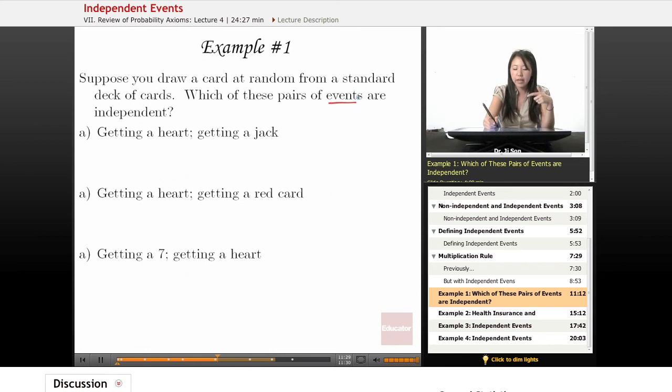It just means that it's like two different aspects of that card, like heart and jack, right? So here it says, is getting a heart independent of getting a jack? Does knowing whether you have one affect the probability of the other? So we could write out the rule for independence of events.